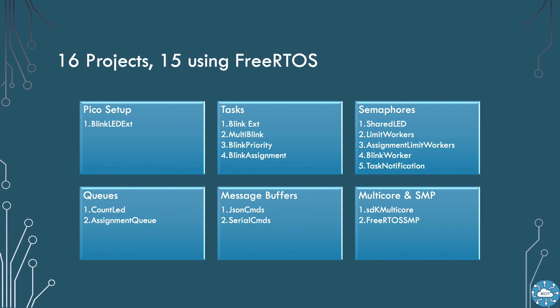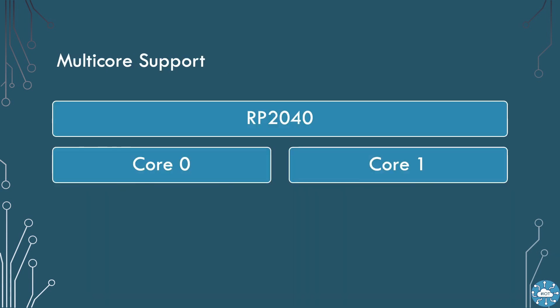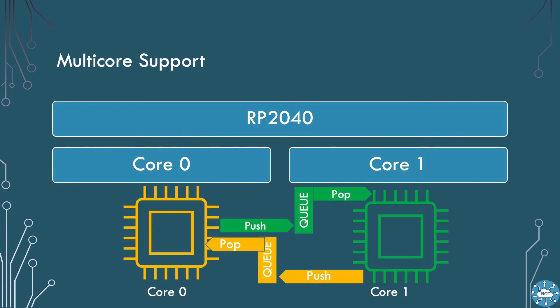The course comes with 16 example projects, 15 of which demonstrate FreeRTOS Kernel capability. You can use these projects to base your work on or borrow ideas from. The Pico and its RP2040 processor has two cores, so I can already do two things at once. We will use one example to explore the SDK's capability to communicate between code running natively on each core.